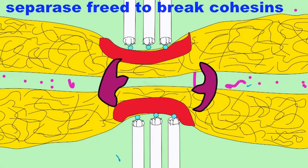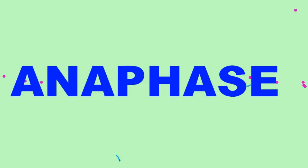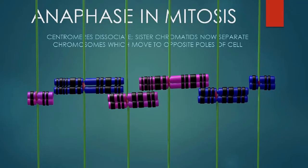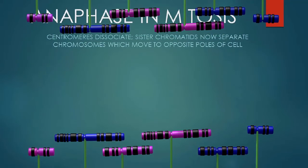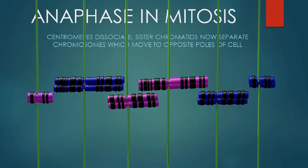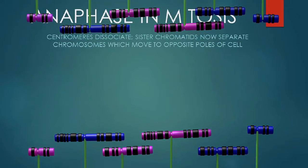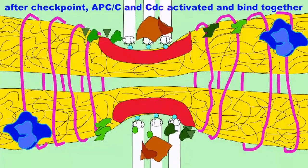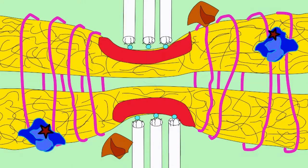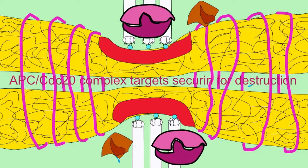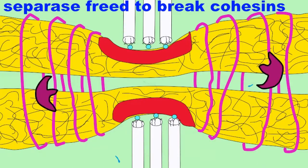As a result, there is a spindle checkpoint, which requires the proper tension in the sister chromatids, assuring that only one will be pulled to each of the opposite poles. Only after this spindle checkpoint has been passed, because of a proper alignment of chromosomes, can APC and CDC20 target securin for destruction, which then frees separase to act on the cohesins. And once the cohesins are broken, the sister chromatids are free to move to opposite poles of the cell.